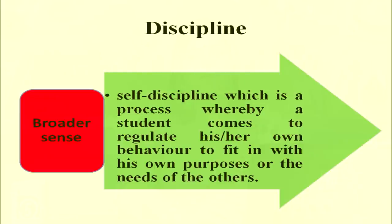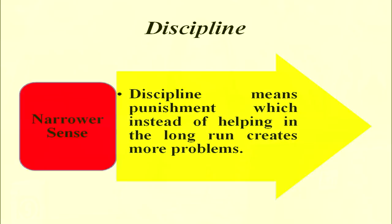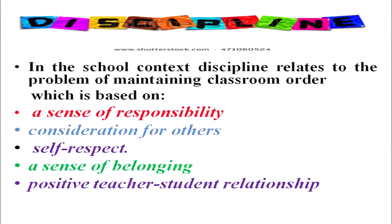Now we will discuss about discipline. In a broader sense, self-discipline is the process whereby a student comes to regularly regulate his or her own behavior to fit in with his own purposes or the needs of others. Whereas in the narrow sense, discipline means punishment, where there is fear in the mind, which instead of helping in the long run creates more problems. In the school context, discipline relates to the problem of maintaining classroom order.